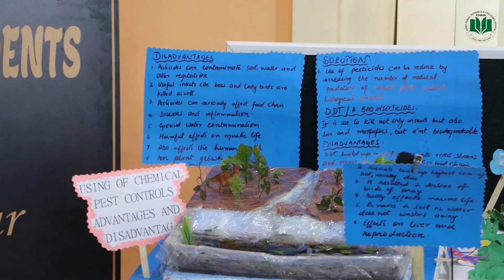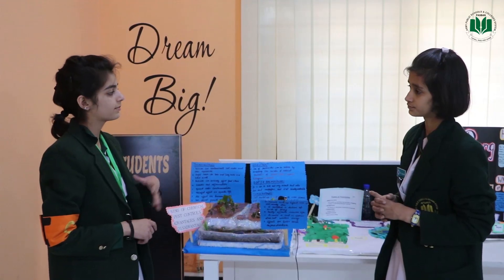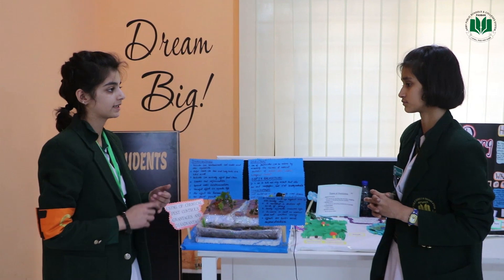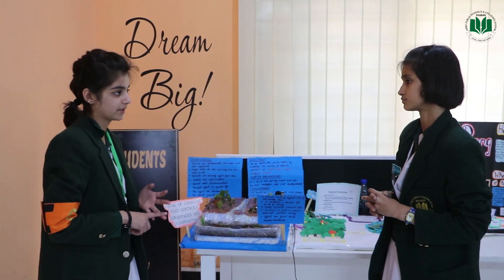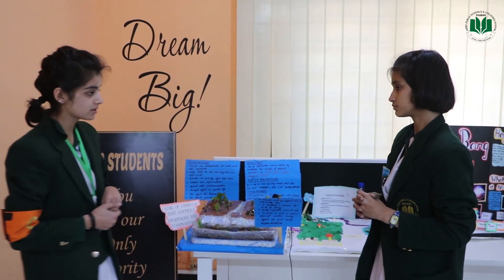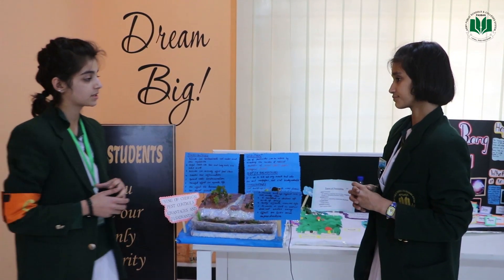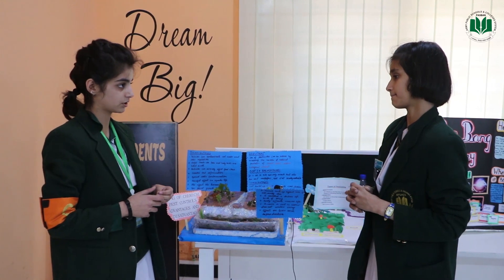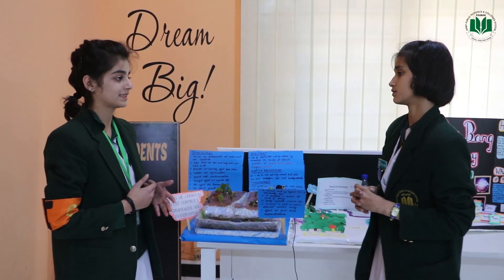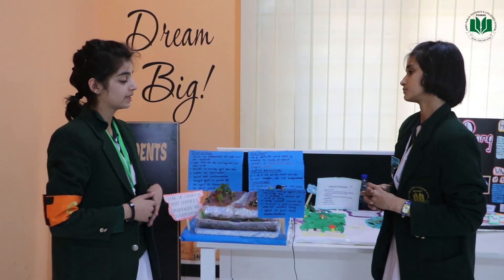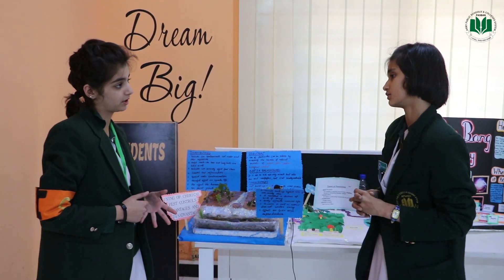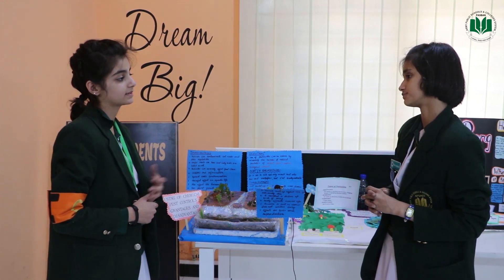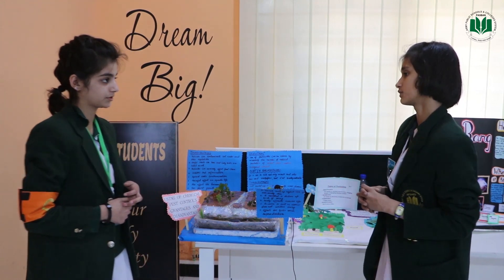Herbicides are used to kill weeds that come in contact with plants or crops to take in light, minerals, or water. Fungicides are used to kill fungal competitors to the crops. And as for insecticides, insects are a very big problem to crops, so insecticides were introduced to kill those insects.